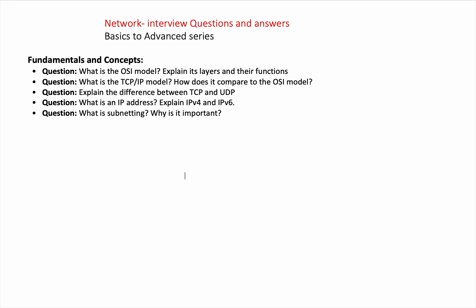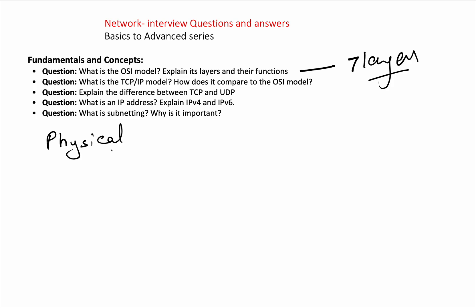Basically, it simplifies network communication with seven layers. Now, what are these seven layers? Going from the top: first we have Application, then Presentation, then Session, then Transport, then Network, then Data Link, and finally Physical.